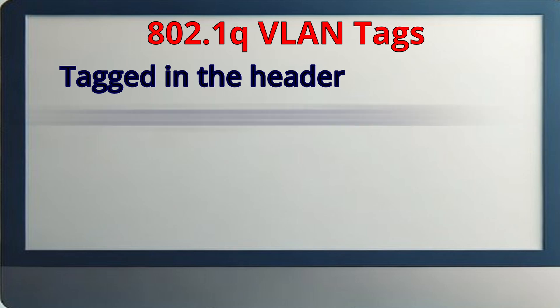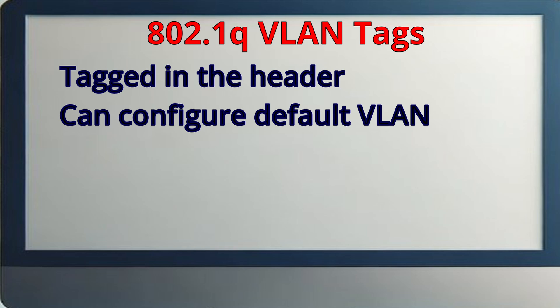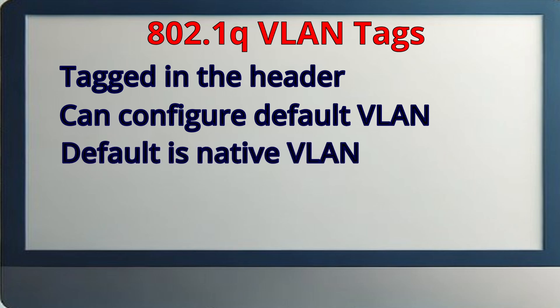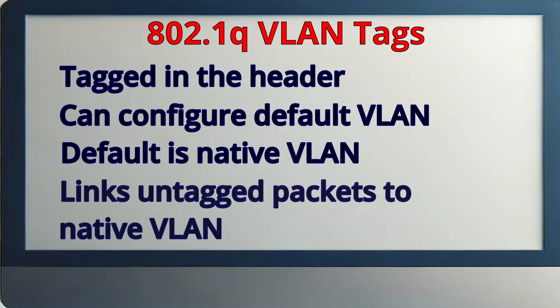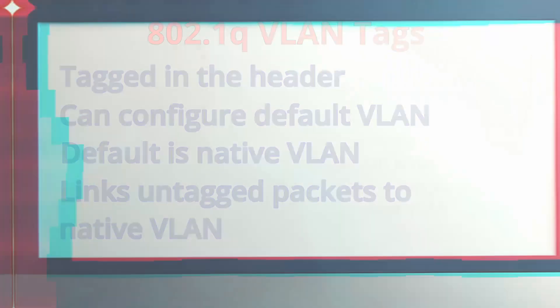802.1q also lets you configure one of the VLANs as the default VLAN for any time a packet comes to a trunk port untagged. This chosen default VLAN is called the native VLAN, and any untagged packets end up being associated with it.